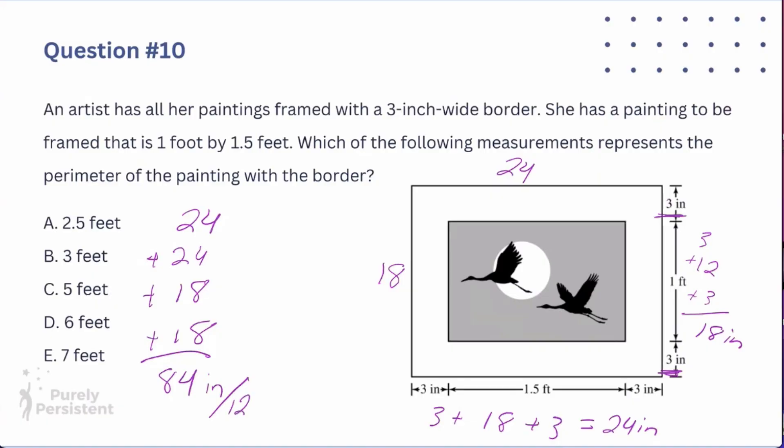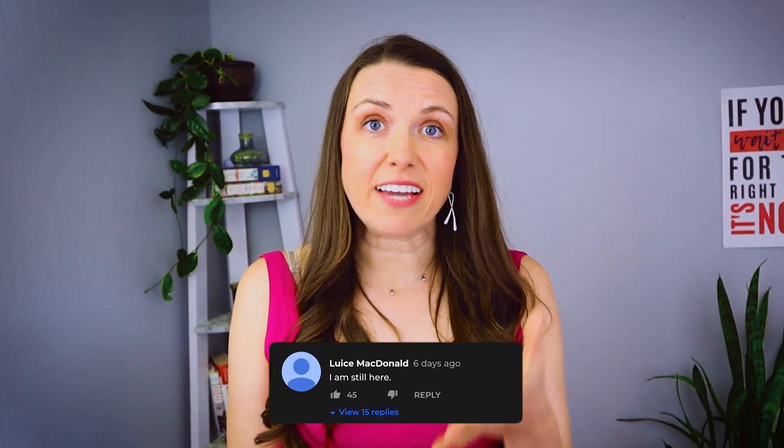Because we're dealing with inches and the answer is in feet, 84 inches divided by 12 gives me 7 feet. And there's my answer, E. We made it to the end — great job! Thank you for being here and dedicating your time to getting your GED or HiSET. I believe in you. I know you can do this. Believe in yourself too. Peace, friends, and God bless.